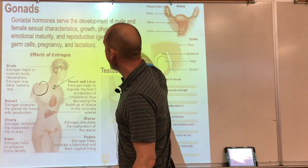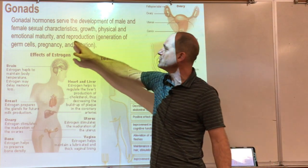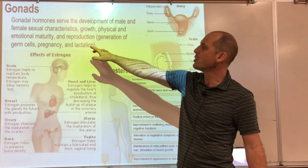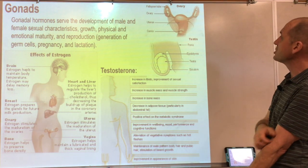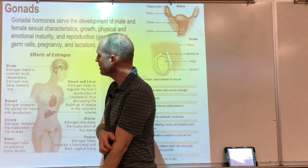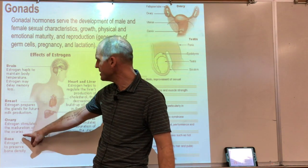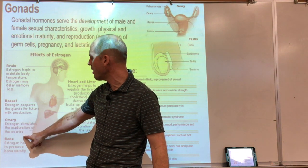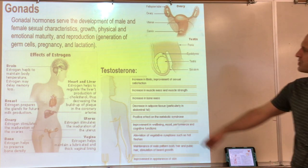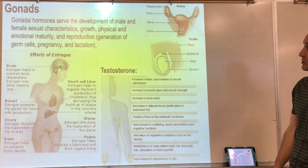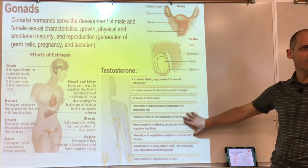The gonads — testicles and ovaries — produce gonadal hormones that govern development of sexual characteristics, physical and emotional maturity, and reproduction including pregnancy and lactation. Estrogen — produced in the ovaries — helps maintain body temperature and delays memory loss among other effects. Testosterone — produced in the testicles and also from the adrenal cortex in women — promotes maturation, increases muscle mass, muscle strength, and bone mass.